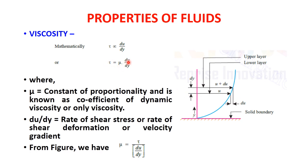Mathematically, tau is directly proportional to du/dy, or tau = mu × du/dy. Here mu is the constant of proportionality known as the coefficient of dynamic viscosity. The term du/dy is the rate of shear deformation or velocity gradient. The coefficient of viscosity can be calculated as mu = tau / (du/dy), i.e., shear stress divided by velocity gradient.